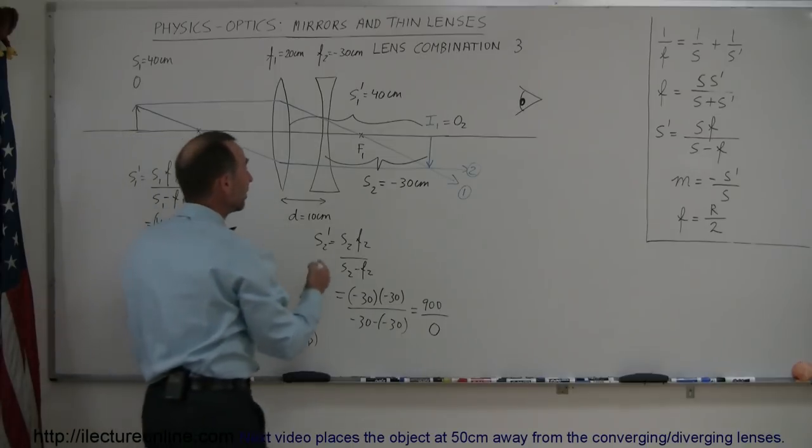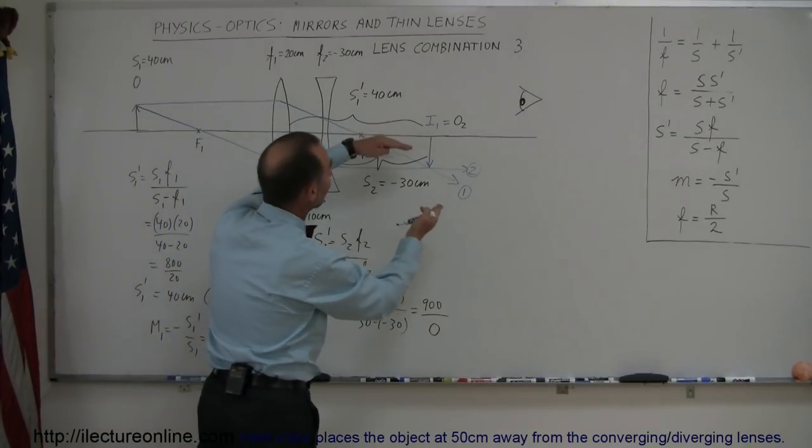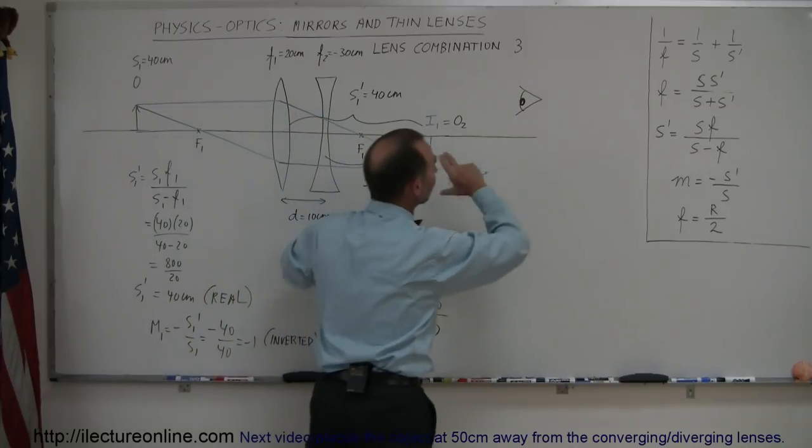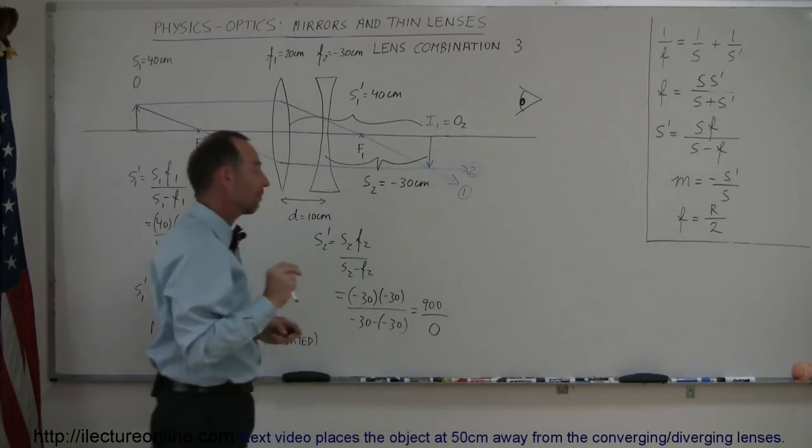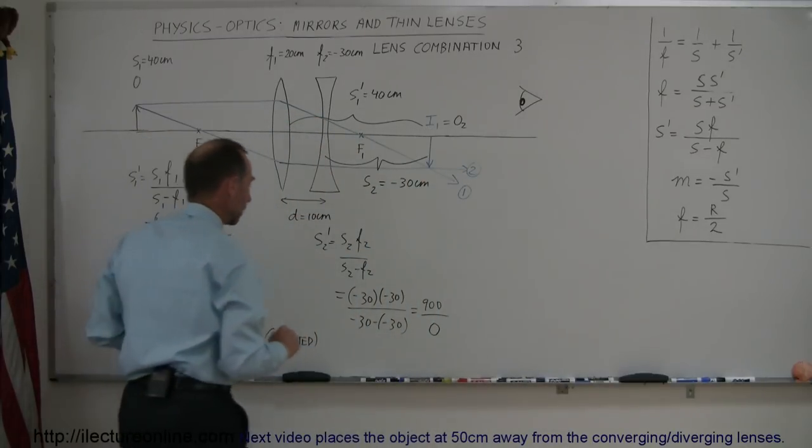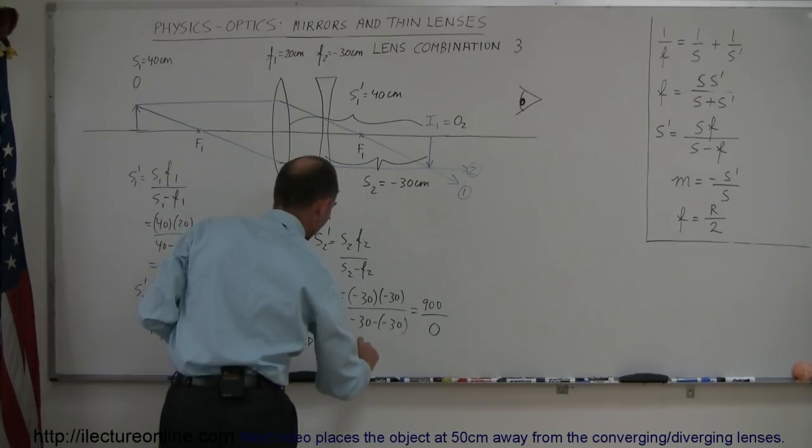Which means that yes indeed the rays will be diverged in such a way that they will never come together, just continue on forever and never form an image anywhere. So that means that the second image is at infinity.